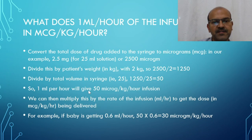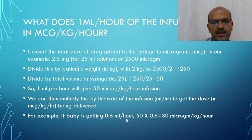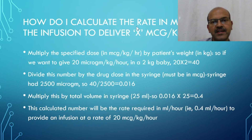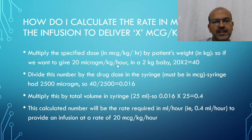We get 50 as the answer, so 1 ml per hour delivers 50 microgram per kilogram per hour. Accordingly, if you want to give 25 microgram per kilogram per hour, it would be 0.5 ml per hour. If the baby is receiving 0.6 ml per hour, multiply 50 by 0.6 to get 30 microgram per kilogram per hour. To calculate the rate for a desired dose — for example, 20 microgram per kilogram per hour in a 2 kg baby — multiply dose by weight and divide by the drug in the syringe in microgram (2500), then divide by the volume.